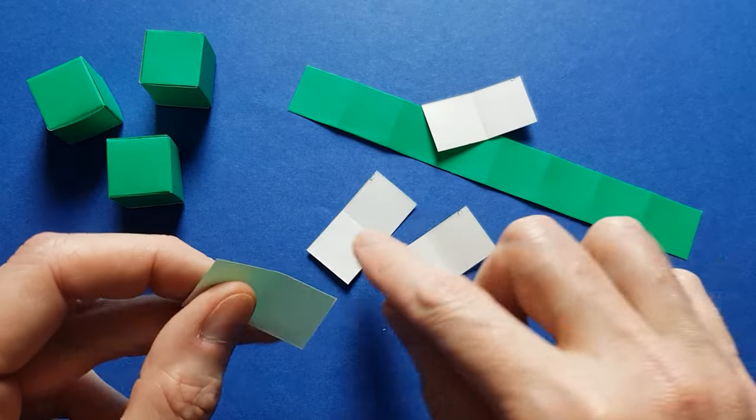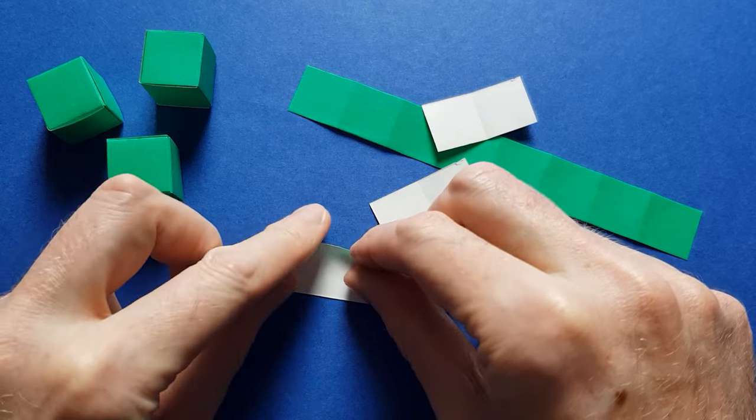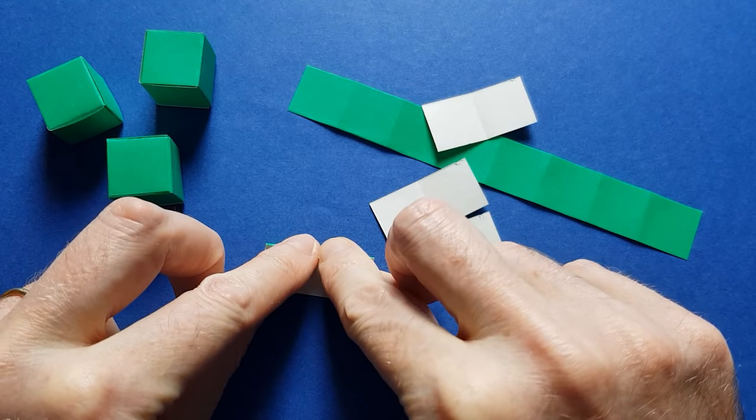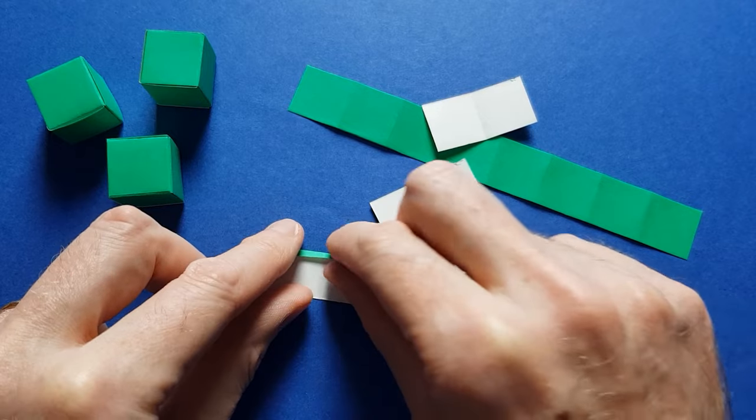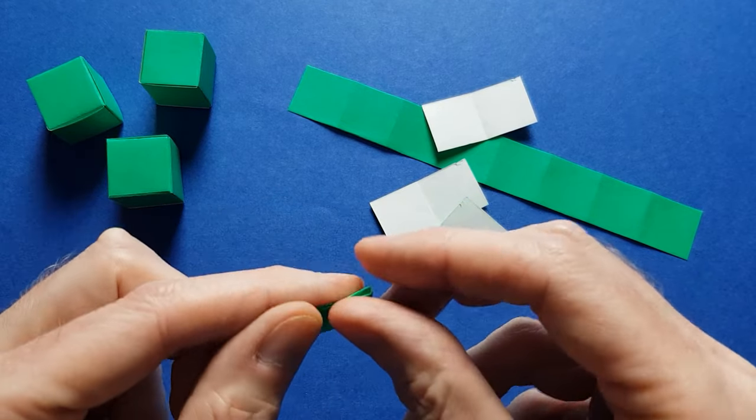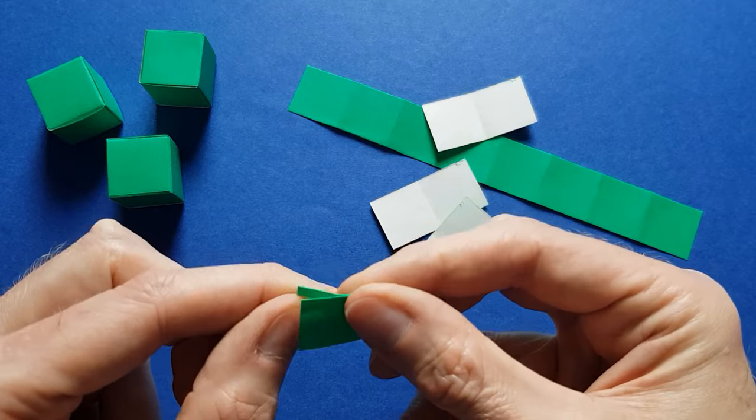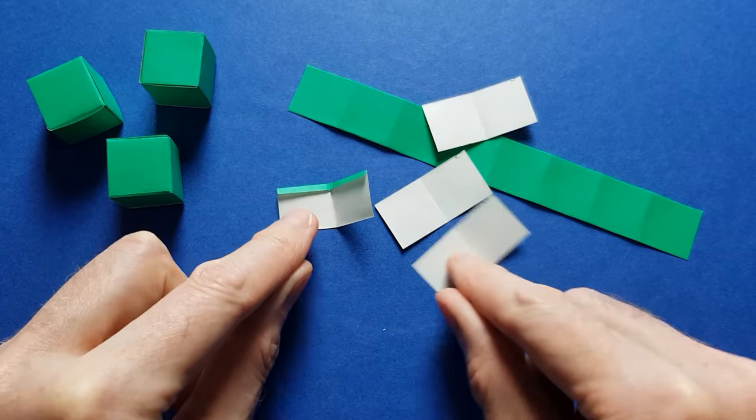And once you have your two by one strips, you just have to make a very teeny fold here. And then fold back the strip. And this makes one clip. We make a second one.